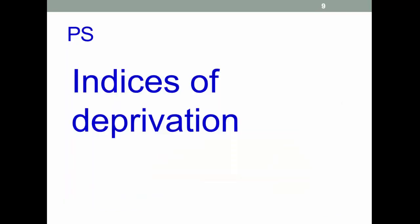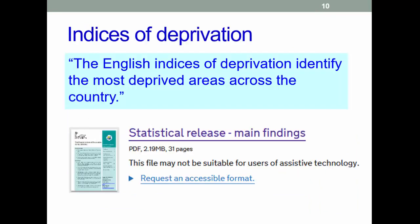Indexes of multiple deprivation, or indices of deprivation as it's sometimes called — since the 1970s, the Ministry of Housing, Communities and Local Government and its predecessors have calculated local measures of deprivation in England. The IMD is the official measure of relative deprivation and is part of a suite of outputs that form the indices of deprivation. There's lots of information available through links here and also directly from a number of sources.